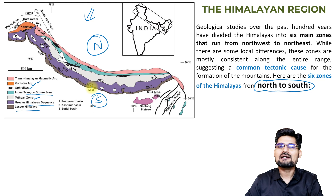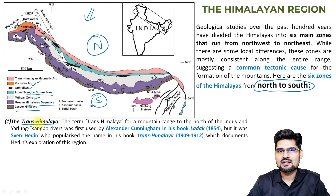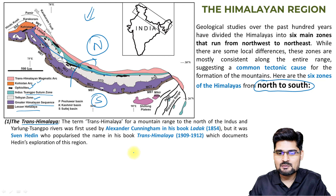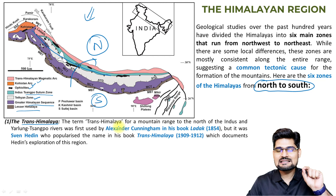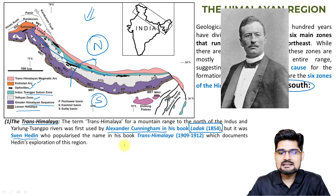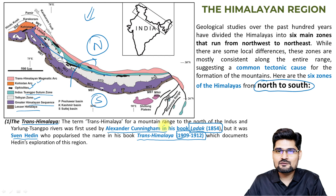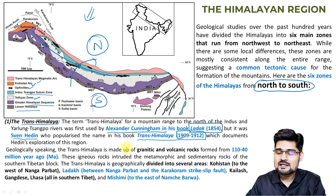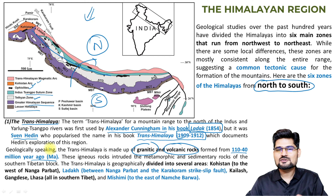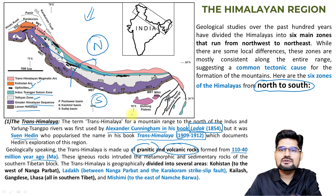The first zone is the Trans-Himalaya. 'Trans' means crossing over — it crosses this particular boundary. Alexander Cunningham first mentioned it in his book 'Ladak' in 1854. Later, Hedin popularized the topic in his book 'Trans-Himalaya' from 1909 to 1912. Trans-Himalaya is made up of granitic and volcanic rocks, formed from 110 to 40 million years ago — from Cretaceous through Tertiary to Eocene.